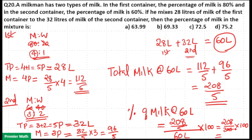Simplifying, that gives 208 divided by 3, which equals approximately 69.33%. So the answer is option B.